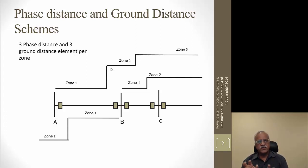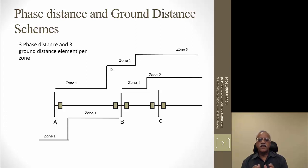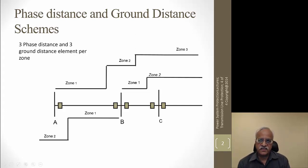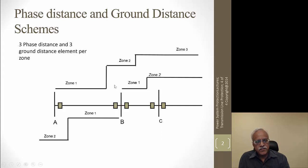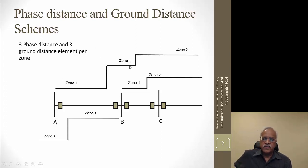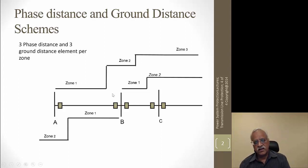Each of those has three elements within them, giving six elements detecting faults on that particular line. Zone 1 is allowed to operate if the fault is within 85% of the line section. Zone 2 is time-delayed to allow discrimination for faults in the adjacent line section, delayed by 15 to 25 cycles based on the utility's coordination margins. Zone 3 can also be used to provide complete redundancy for all lines going out of section B.